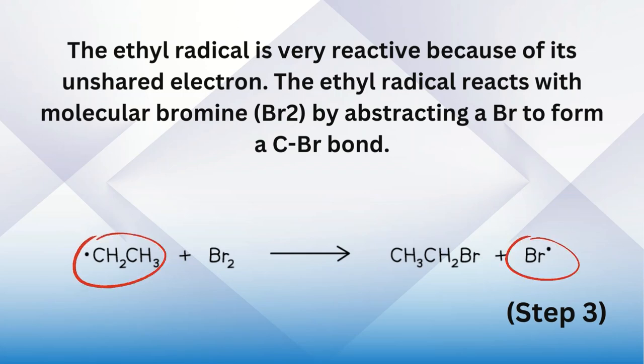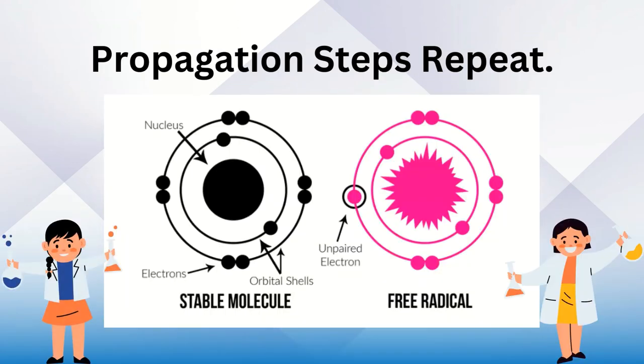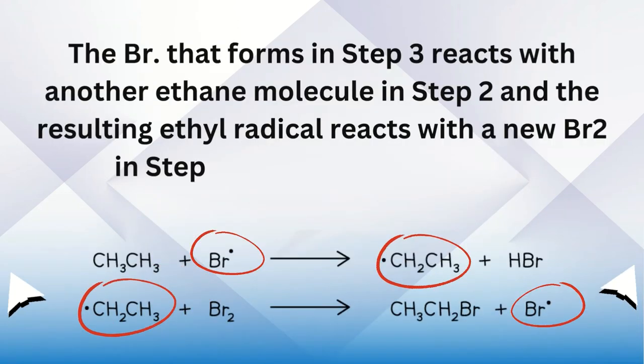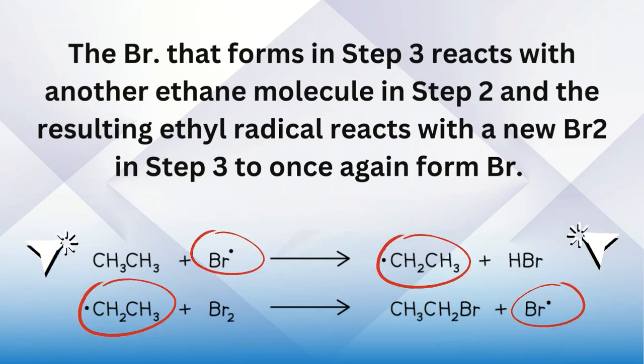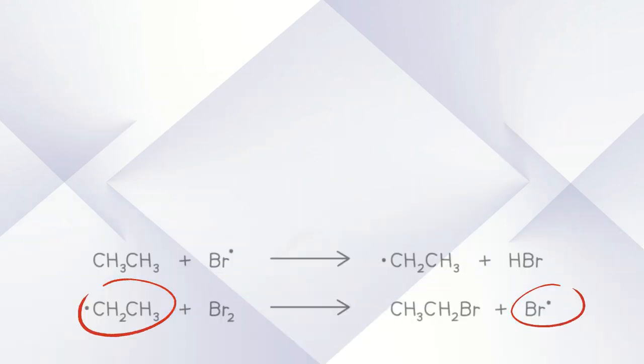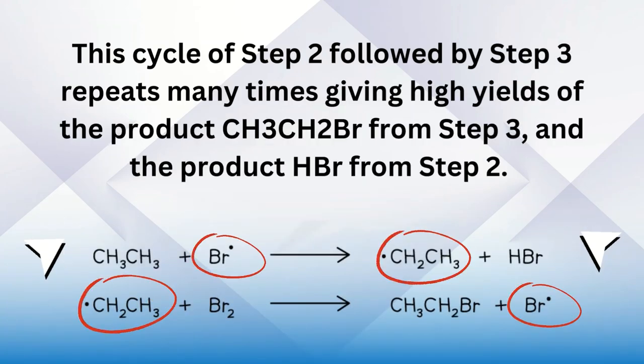Propagation steps repeat: The bromine radical that forms in step three reacts with another ethane molecule in step two, and the resulting ethyl radical reacts with a new Br₂ molecule in step three to once again form bromine radical. This cycle of step two followed by step three repeats many times, giving high yields of the products CH₃CH₂Br, known as ethyl bromide, and HBr, hydrogen bromide.